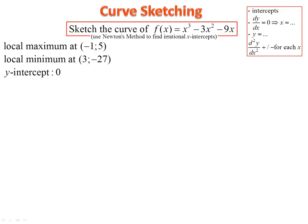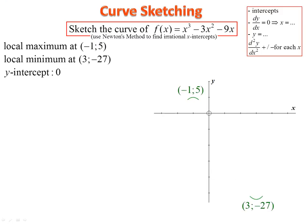The y-intercept is zero — substitute zero for x. Let's put this onto the curve so far, because we still need to find the x-intercepts using Newton's method, which means we need to estimate. Let's put in our local maximum and minimum. Notice the curve shape at the maximum and minimum. We can estimate: there is one x-intercept at about negative 1.8, and the other at about 4.8.